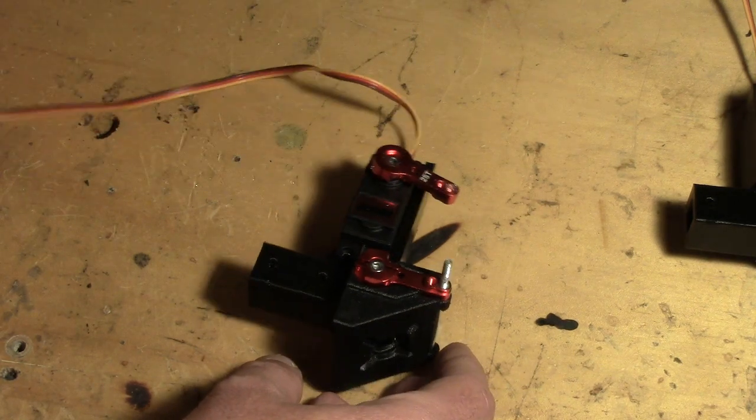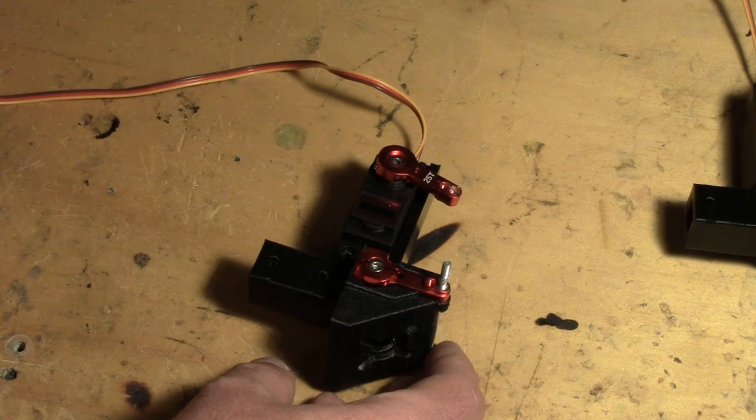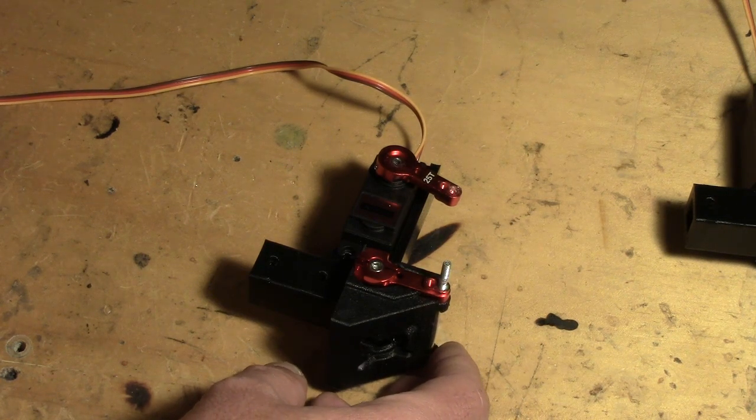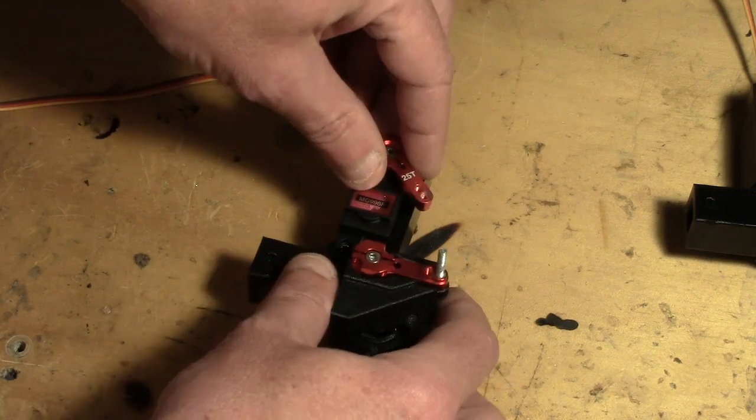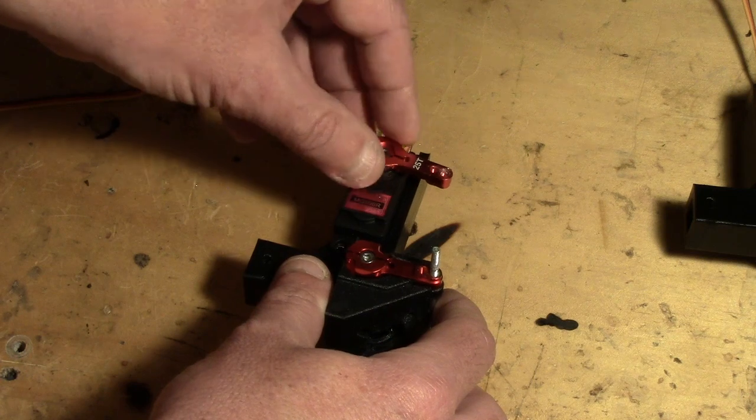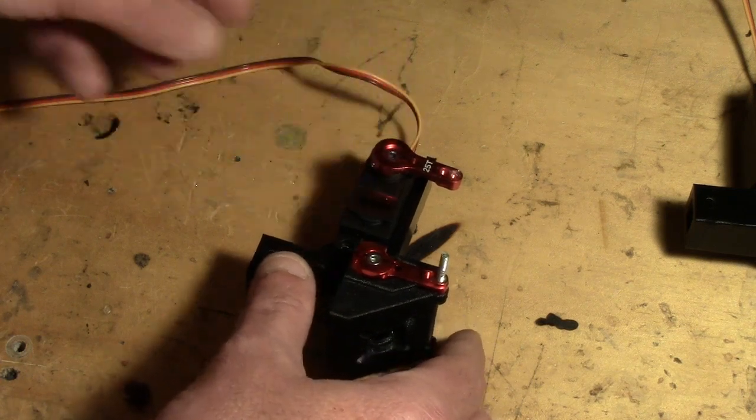A very handy tool for achieving this is a servo tester, so in my case I can just push a button to put the servo in its neutral position and then I can adjust that phase angle of the servo horn and then bolt it down in that neutral position.